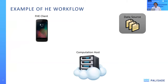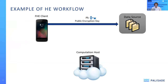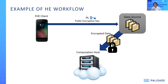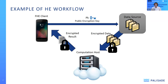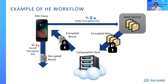An example of a homomorphic encryption workflow involves three parties: a client, a data source, and a computation host. In a public-key HE scenario, the FHE client sends a public key; the data source uses it to encrypt the data; the encrypted data is sent to the computation host; and the computation host sends the encrypted results back to the party that can decrypt them. The critical component is that the computation host performs all computations non-interactively without getting access to the actual data.